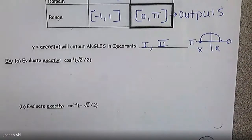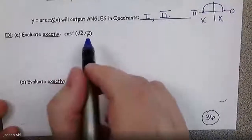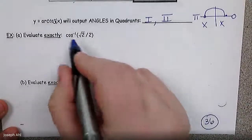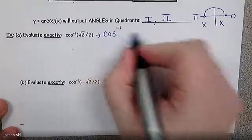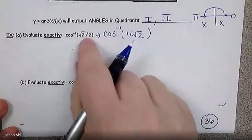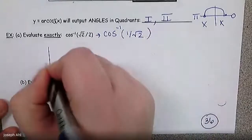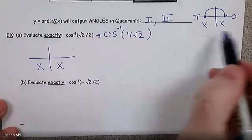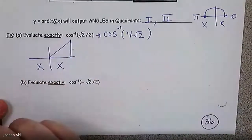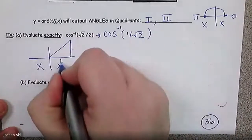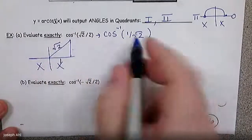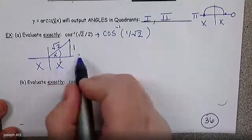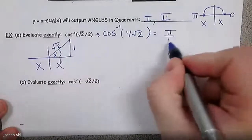For cosine inverse of √2/2 — think of this as 1/√2, the rationalized form. Arc cosine is only in quadrants 1 and 2. Cosine is adjacent over hypotenuse. When the hypotenuse is √2, this is the 1-1-√2 triangle — the 45-degree triangle. So the answer in radians is π/4. That's the reference angle.